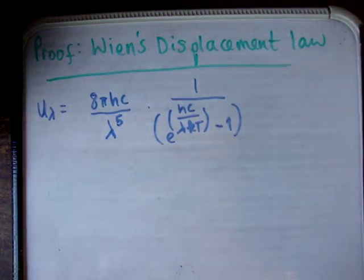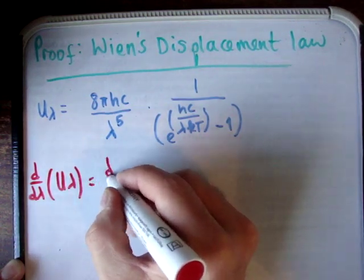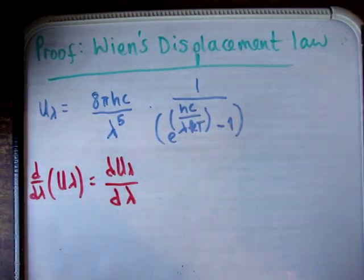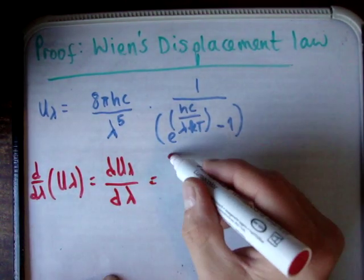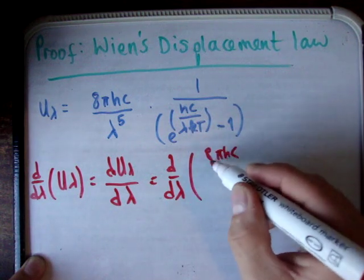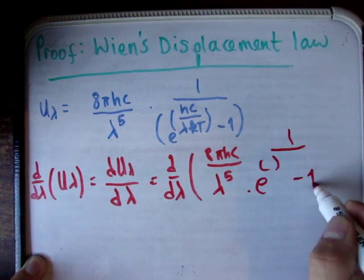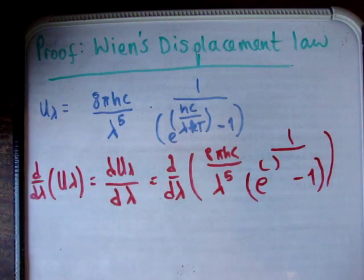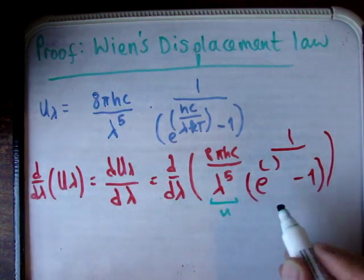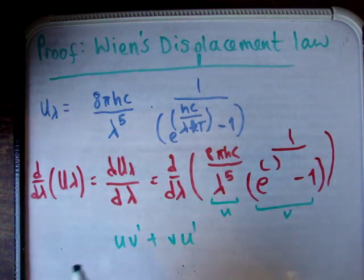So what we need to do is we need to differentiate this function here. So what we need to do is get dd lambda of u lambda. And that's going to be equal to dd lambda of my big horrible function here, 8 pi hc lambda to the 5th times 1 over my exponential minus 1. Now for those of you that are a small bit switched on, you'll realize that we're differentiating a product. So we need a product rule. So I'm going to define in this product here u and this v. And we should know that it's uv' plus vu'.